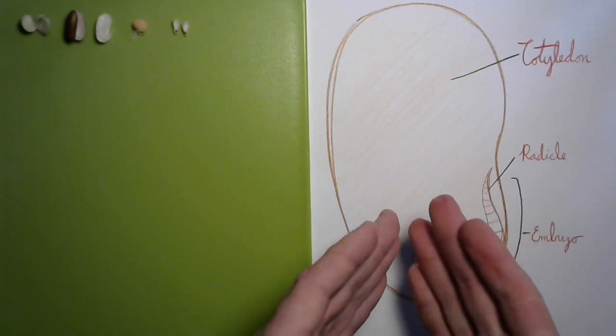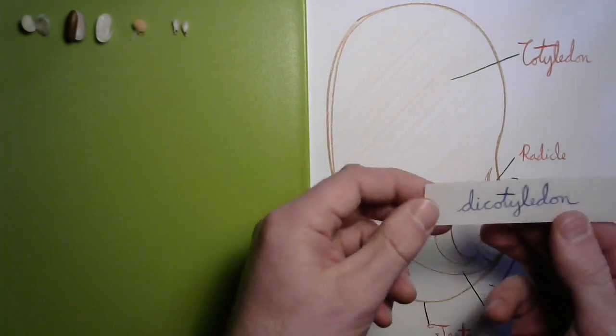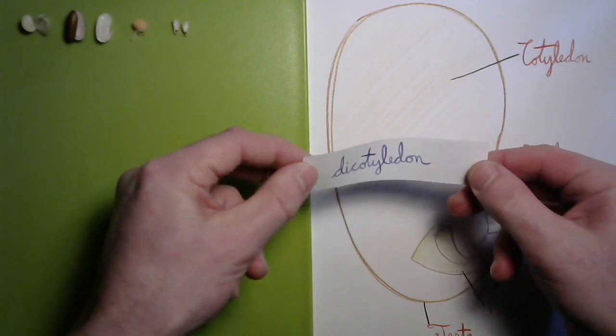Now, if we have two of them, remember, we call it a dicot or a dicotyledon. It's pretty fantastic.